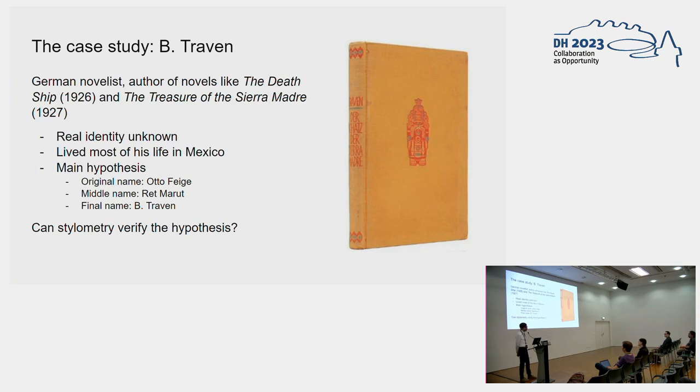B. Traven probably originally had the name Otto Feige. We know he was born at the end of the 19th century, 1882 if I remember correctly. He was a trade unionist active at the beginning of the 20th century, but then he disappeared. There is no more information about him.